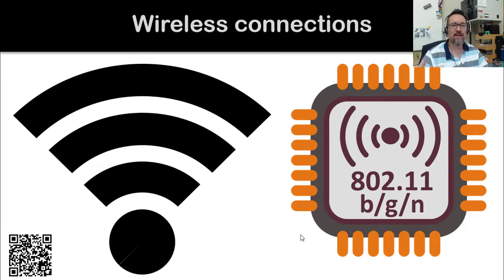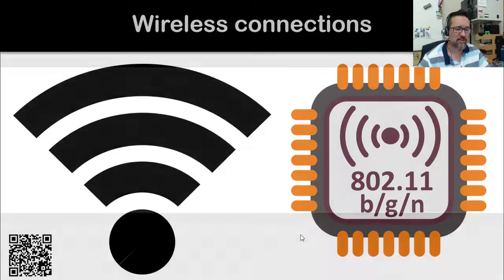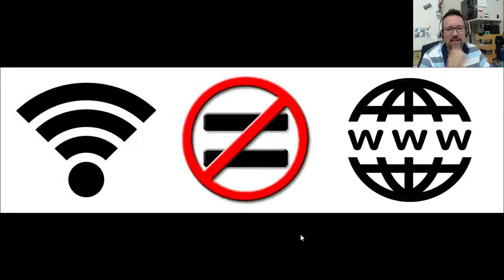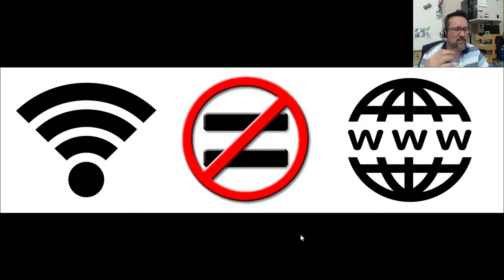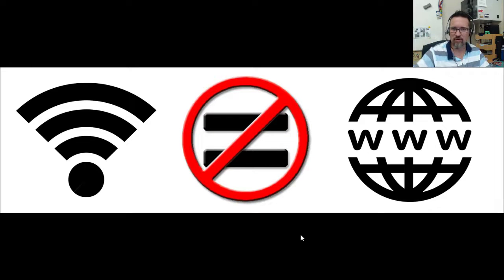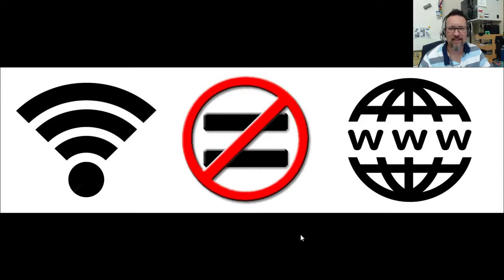Finally, an important clarification: Wi-Fi does not equal internet access. Wi-Fi is simply a connection technology — a wireless connection to a network. If the network is online and there's a router enabling computers to get online, then you can access the internet through your Wi-Fi connection. But Wi-Fi itself does not mean internet access, so please stop using the two terms interchangeably.